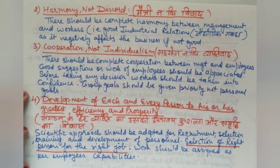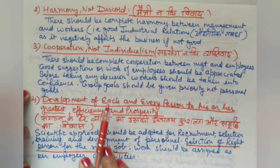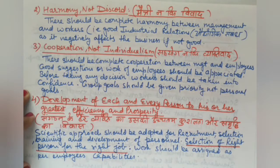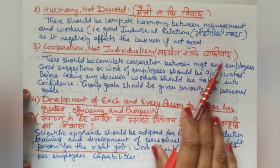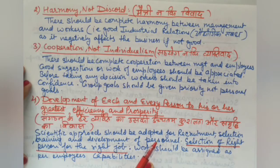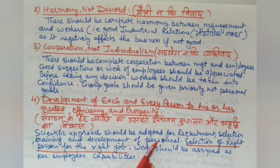A good relationship and a sense of belonging should be established in the organization. Workers must feel they belong to the organization and management. Group goals should be given priority over personal goals — there should be no individualism. You will also find that some of Henry Fayol's principles match with Taylor's principles.